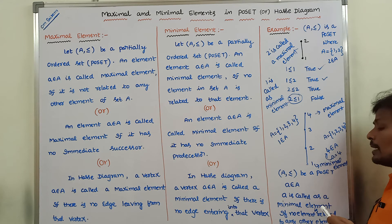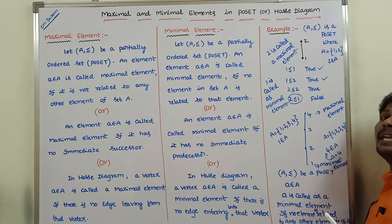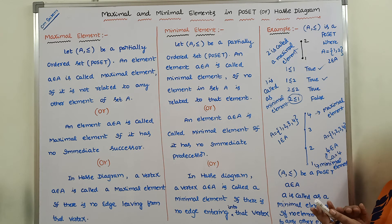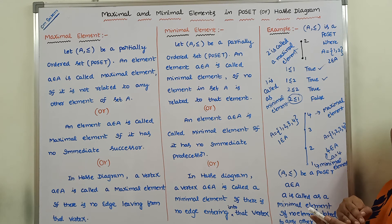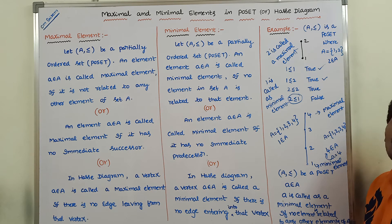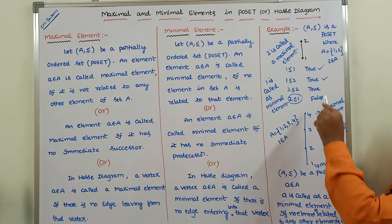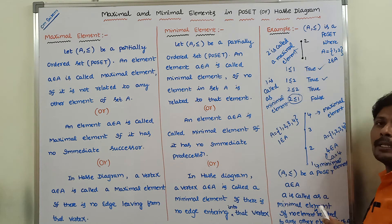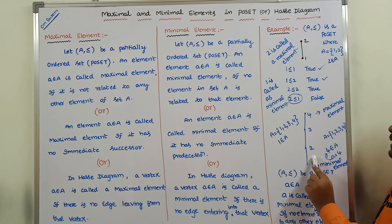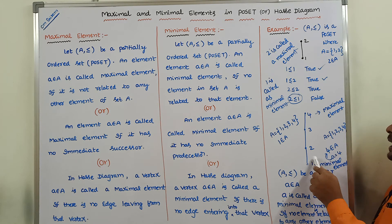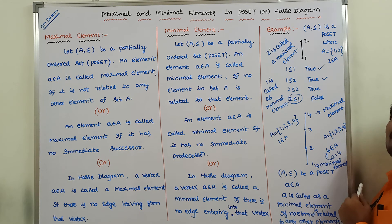Second definition: an element small a belongs to capital A is called a minimal element if it has no immediate predecessor. A predecessor is a vertex connected by edges in the downward direction. In this example, for element 1, there are no immediate predecessors. No vertex serves as an immediate predecessor for vertex 1. Hence, element 1 is called a minimal element. In this example also, element 1 has no immediate predecessors in the downward direction, so element 1 is called a minimal element.